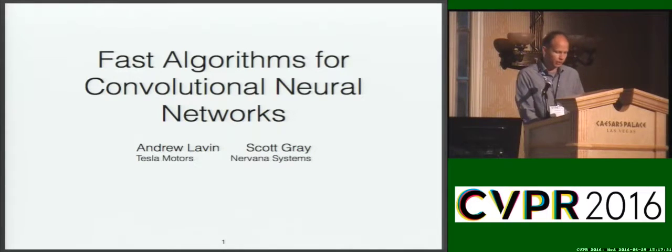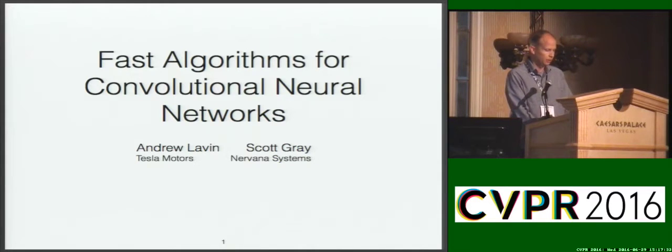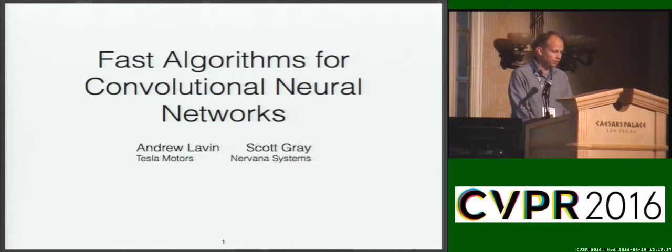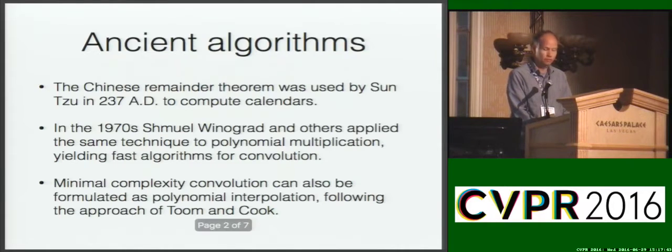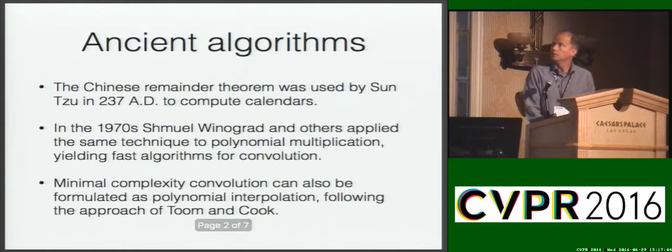Our paper presents an algebraic framework for studying the arithmetic complexity of a convolutional neural network. We then leverage this framework to yield practical algorithms which have already become the fastest component implementations available.